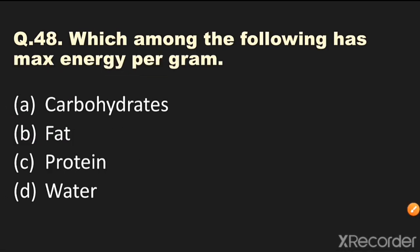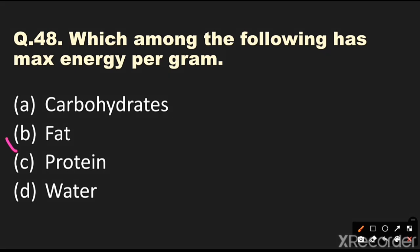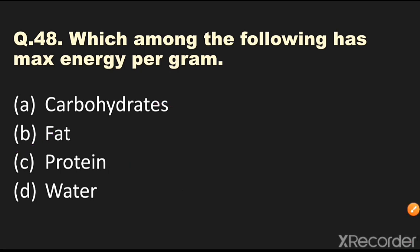Question number 48: Which among the following has the maximum energy per gram? Options are carbohydrates, fat, protein, or water. The answer is fat. Carbohydrates and protein have less energy per gram than fat, and water has no energy.